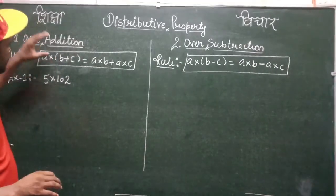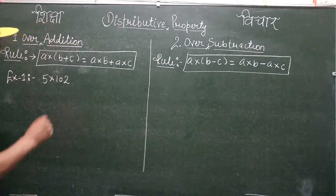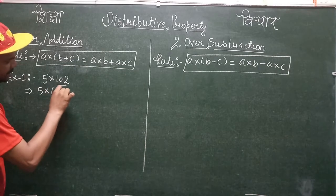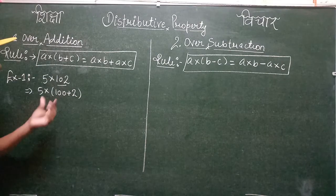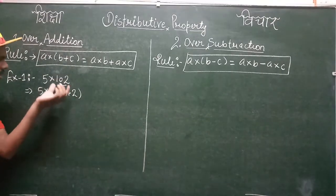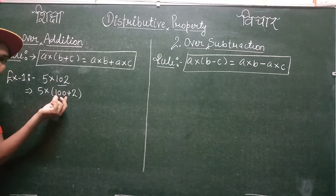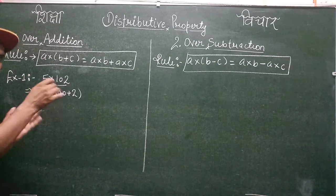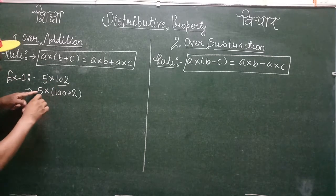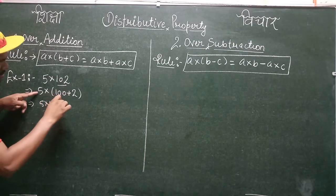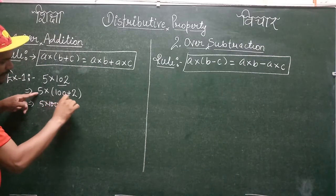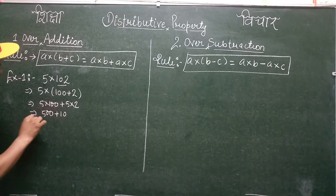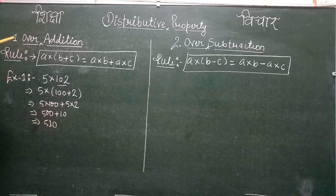To understand distributive property over addition, we write 102 as 100 + 2, since the sum of 100 and 2 gives 102. Now, according to this property, the multiplication of 5 with 102 is distributed over addition — that means 5 is multiplied by 100, and then 5 is multiplied by 2. So we get 5×100 + 5×2, which is 500 + 10, and after addition we get 510. That is the answer to this multiplication using the distributive property over addition.